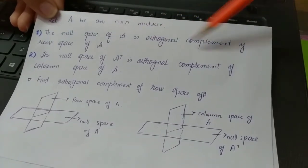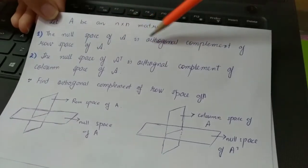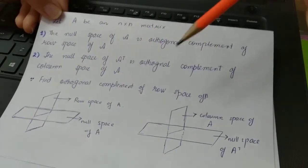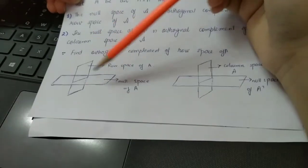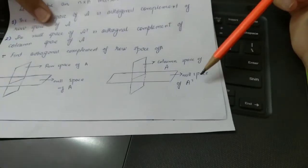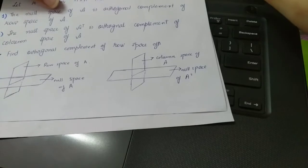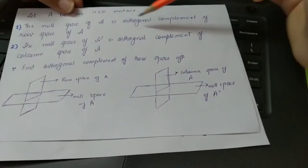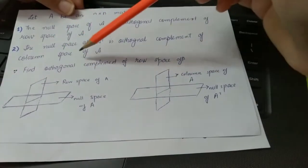So the null space of A is the orthogonal complement of the row space of A, and the null space of A-transpose is the orthogonal complement of the column space of A. If we look at this geometrically: the row space of A and the null space of A are perpendicular to each other, and the column space of A and the null space of A-transpose are perpendicular to each other — they are orthogonal complements. Now I will show you an example to prove these two statements.